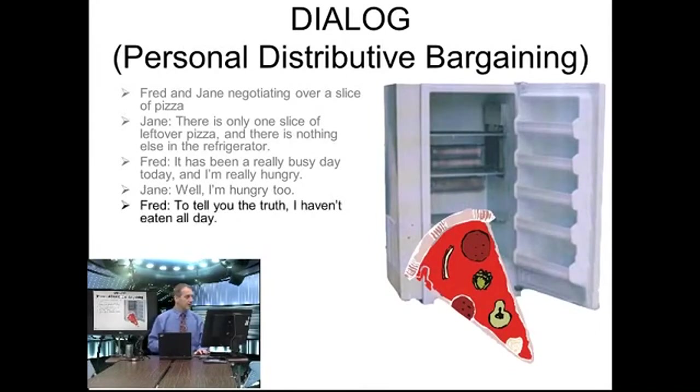Fred answers: to tell you the truth, I haven't eaten all day. Now, remember — in a negotiation we need to have two things: we need to have something in common, and we need to have something different. Fred and Jane have something in common — they both want to eat. It's time for dinner, and they both want to eat.